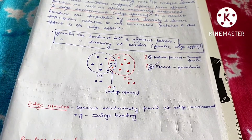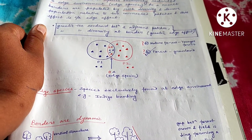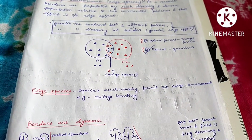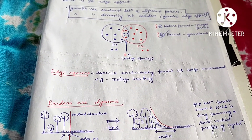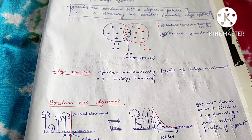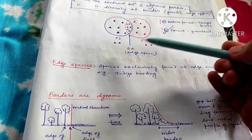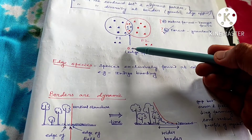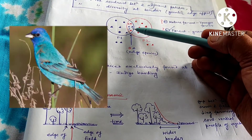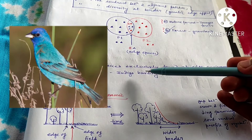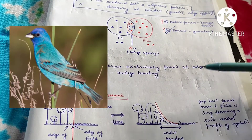Edge species are those species exclusively found in the edge environment. One example is the indigo bunting.